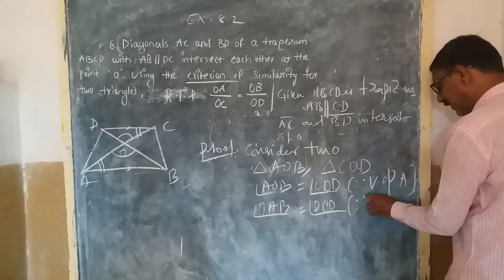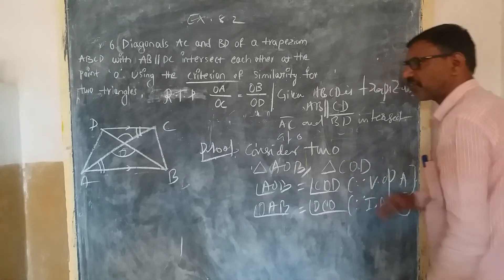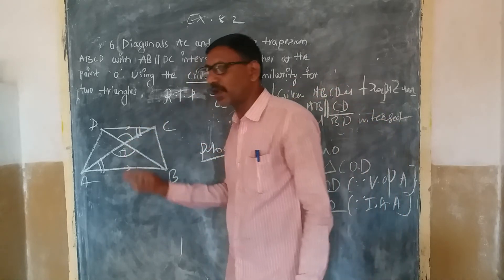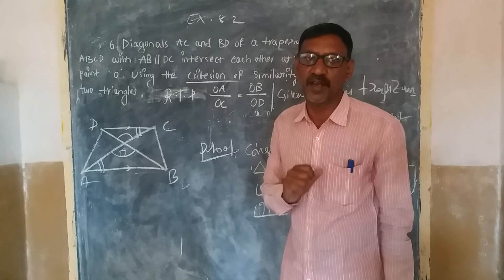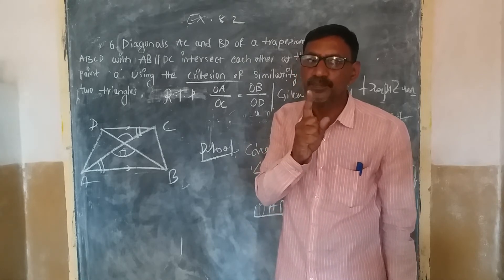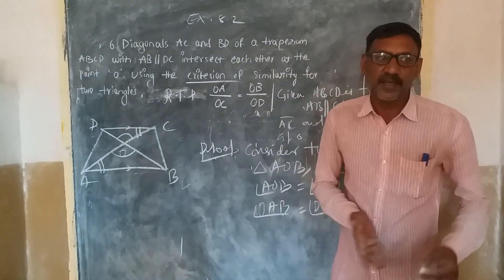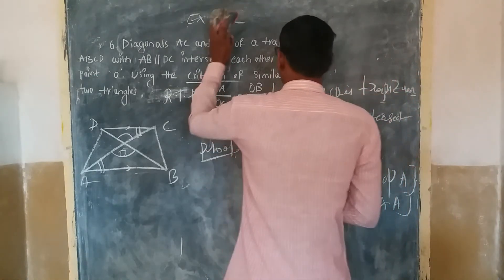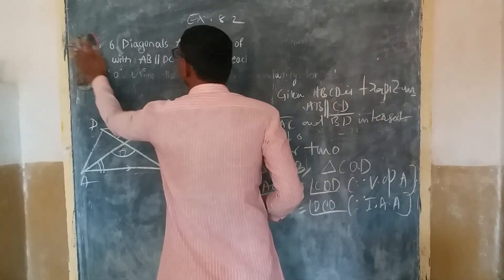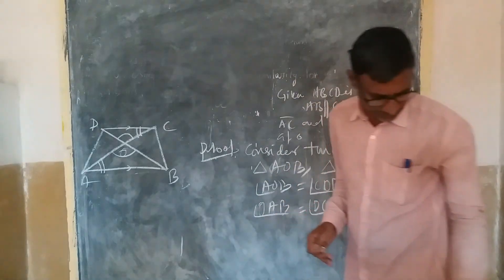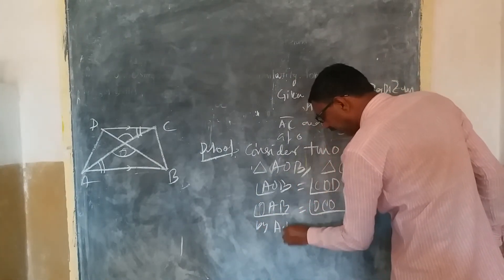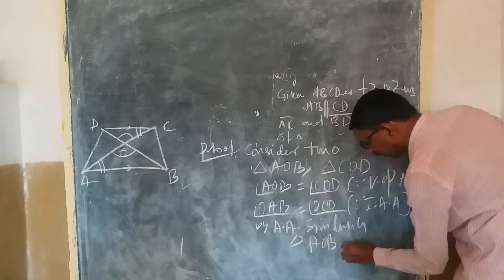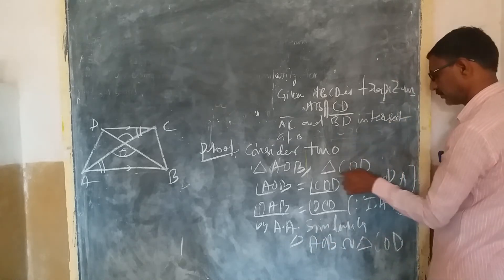Since interior alternate angles are very important here — AB is parallel to CD and AC is a transversal — the alternate angles are equal. Therefore, these two triangles AOB and COD are similar. When two triangles are similar, their corresponding sides are proportional.